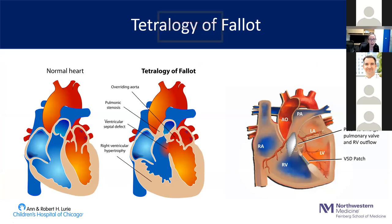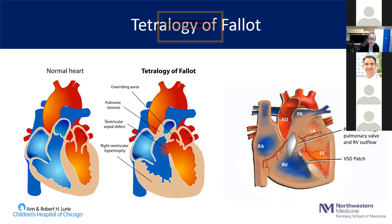Moving on to Tetralogy of Fallot — functionally this is a two-ventricle circulation. They have four major parts of their congenital heart disease: right ventricular hypertrophy, a VSD, pulmonary stenosis, and a slightly displaced aorta. Their repairs usually consist of patching the pulmonary stenosis to create a relatively normal-sized pulmonary artery and closing the VSD. Functionally, patients with Tetralogy have two-ventricle circulation.